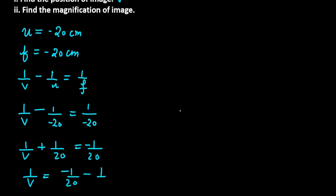1 by v is minus 1 by 20 minus 1 by 20, which equals minus 2 over 20, which is minus 1 over 10. So v is minus 10 cm.